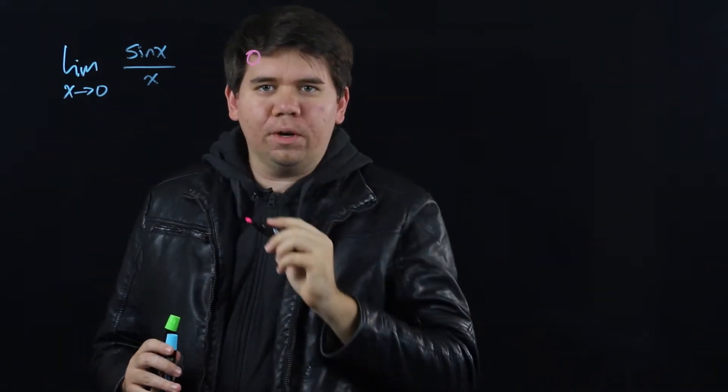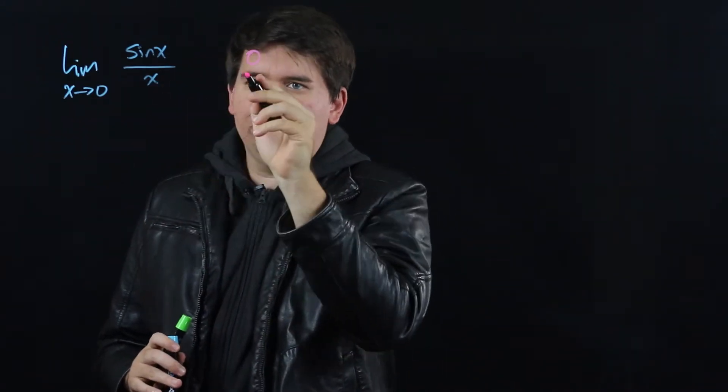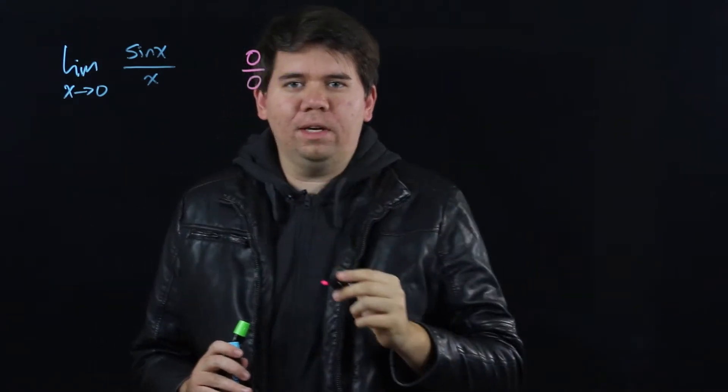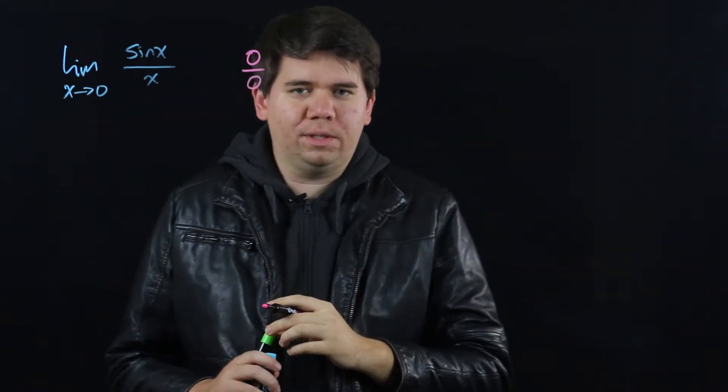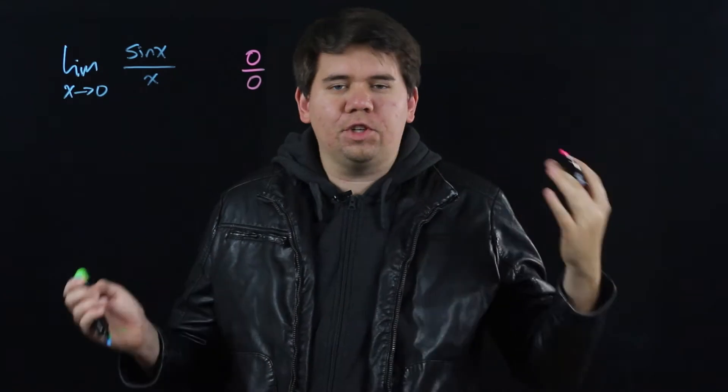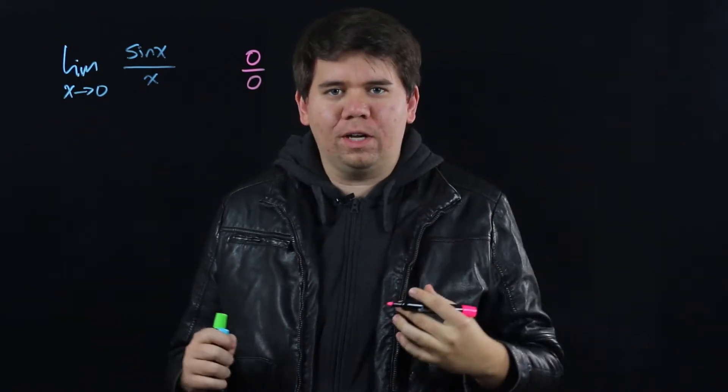So the top is running to 0, but the bottom is also running to 0. So we get something of this form 0 over 0. We call this an indeterminate form. It's not clear what this is going to come out to be.